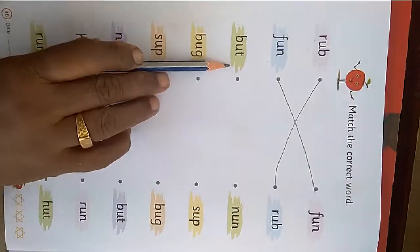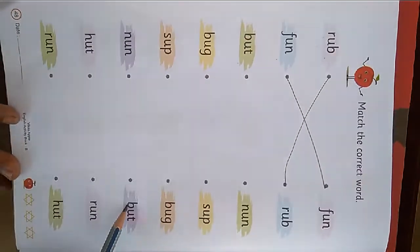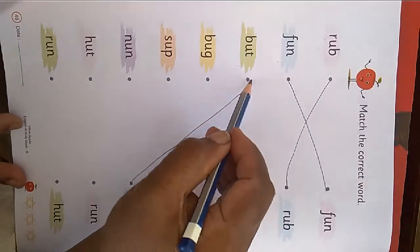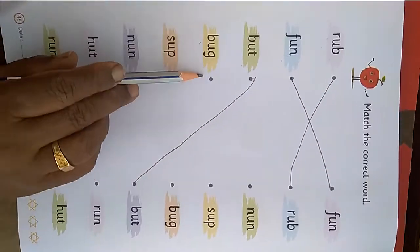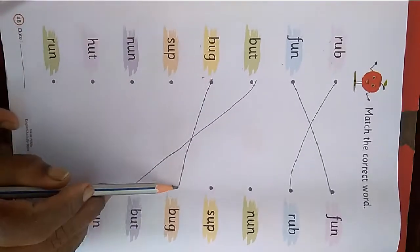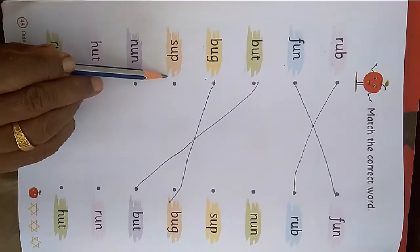B U T but. But kithere? Yer. B U G bug. B U G bug. S U P sub.